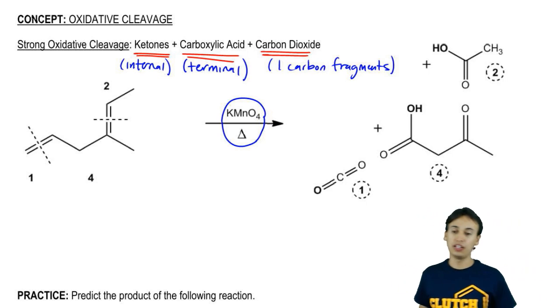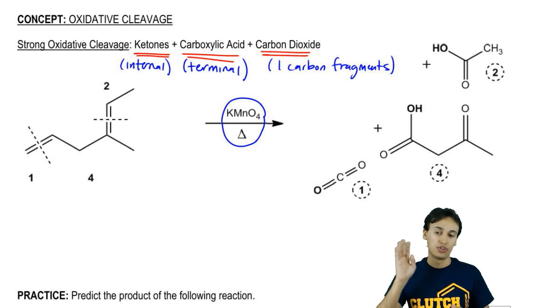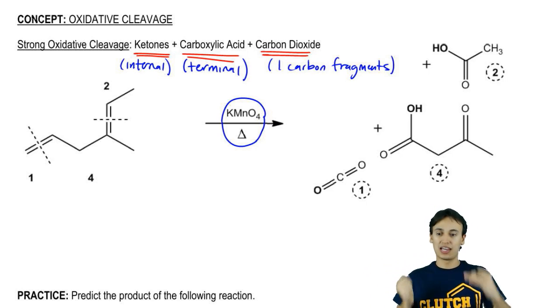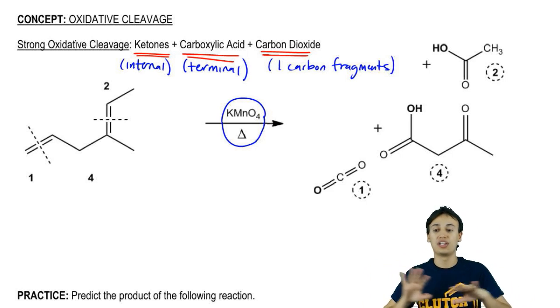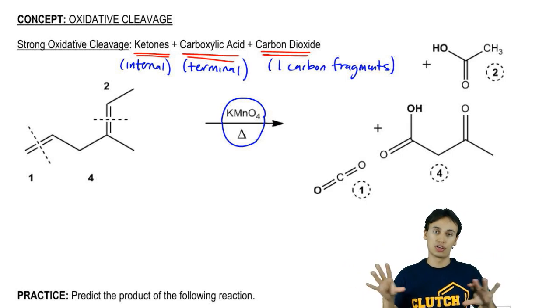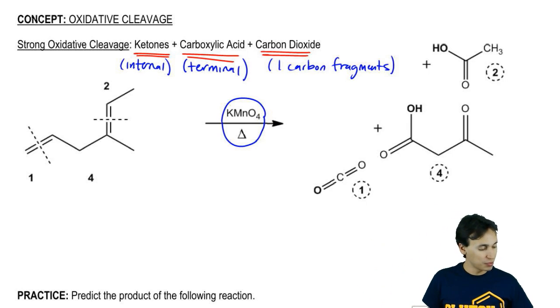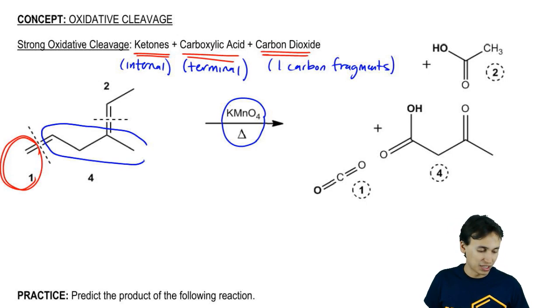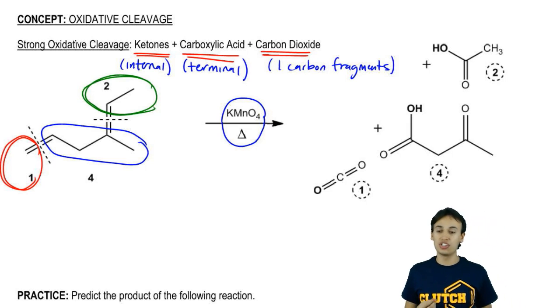As you can see, if I go ahead and I slice down those double bonds, cleavage means they're going to be completely sliced off and I'm going to get completely different chunks of carbons. I would wind up getting a one carbon chunk here, a four carbon fragment here, and then a two carbon fragment here. The question is what does each of these become?